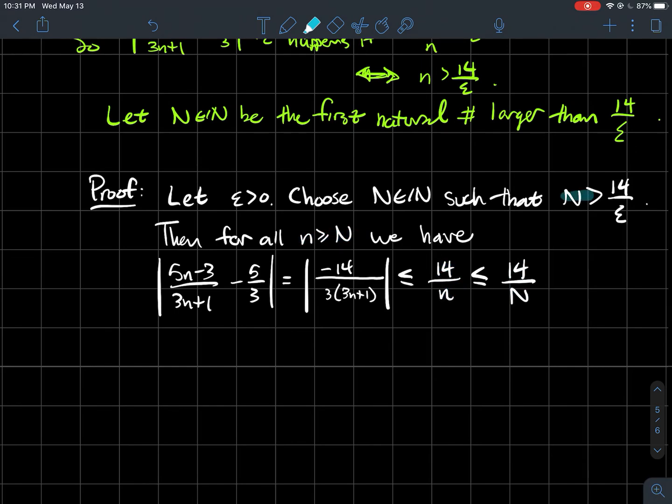Why is that fantastic? Because if N > 14/epsilon, then 14/N < epsilon. That's the end of the proof. We successfully proved this limit equals 5/3 because eventually all terms in my sequence have distance from 5/3 smaller than epsilon.